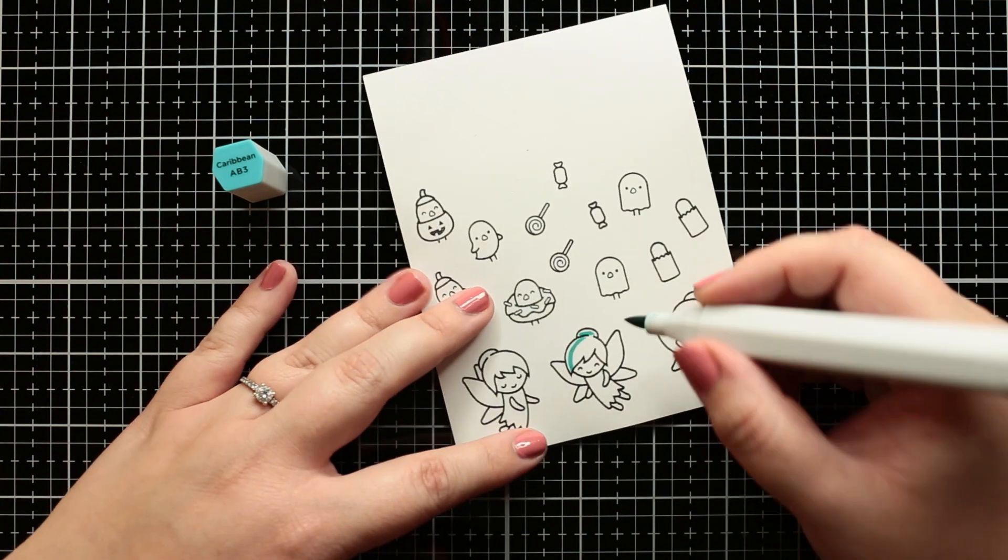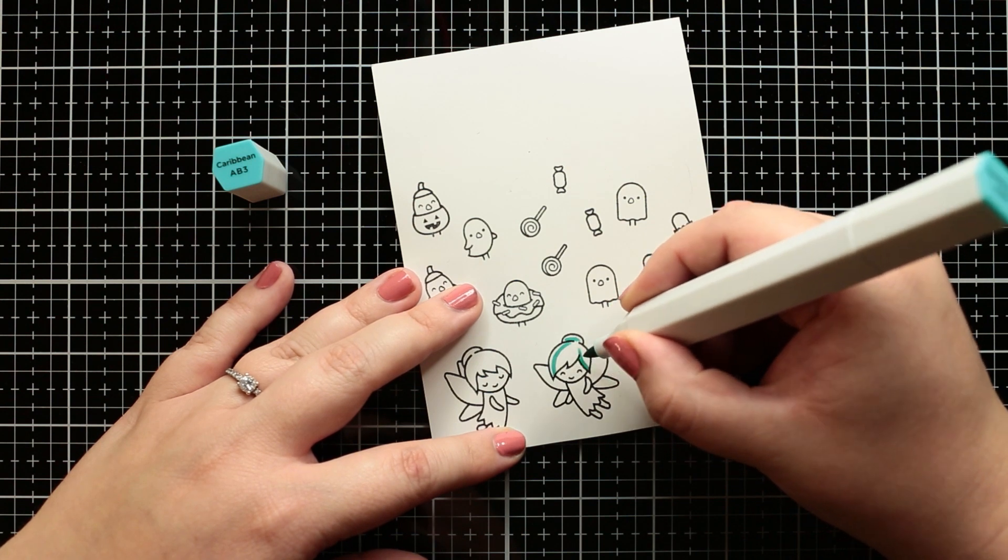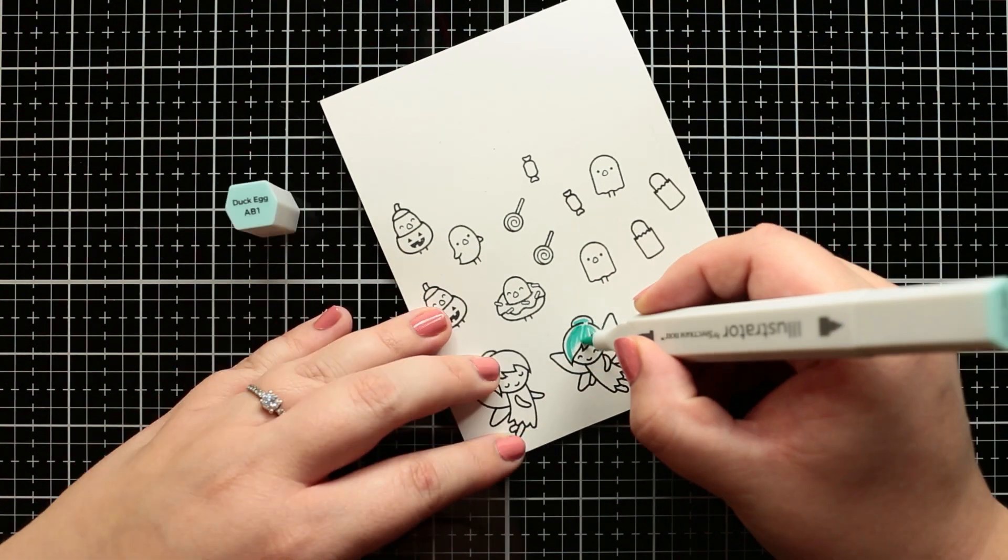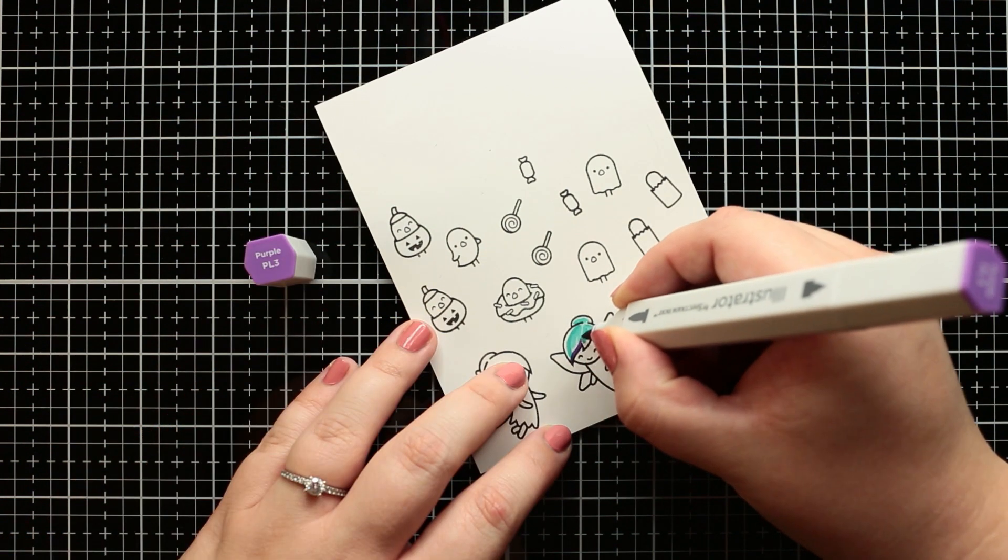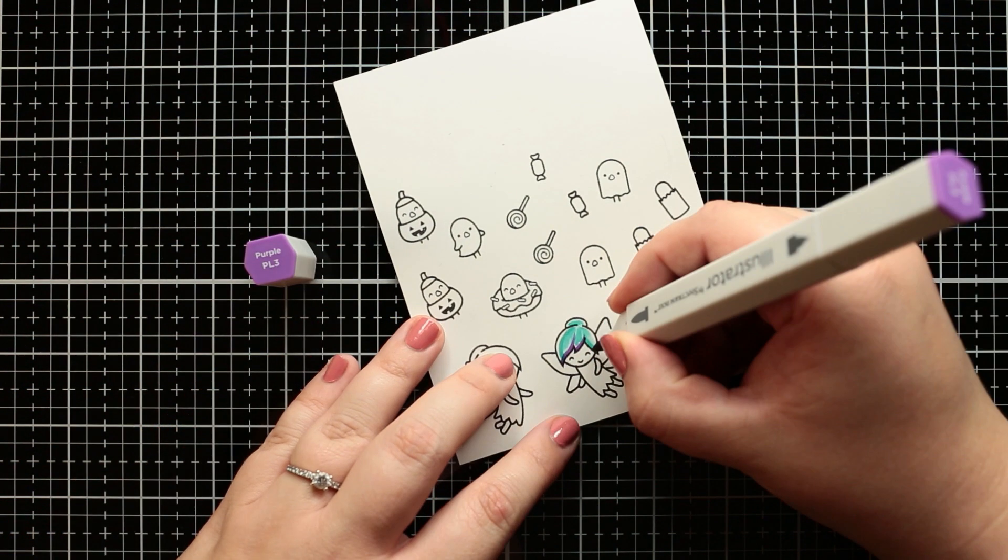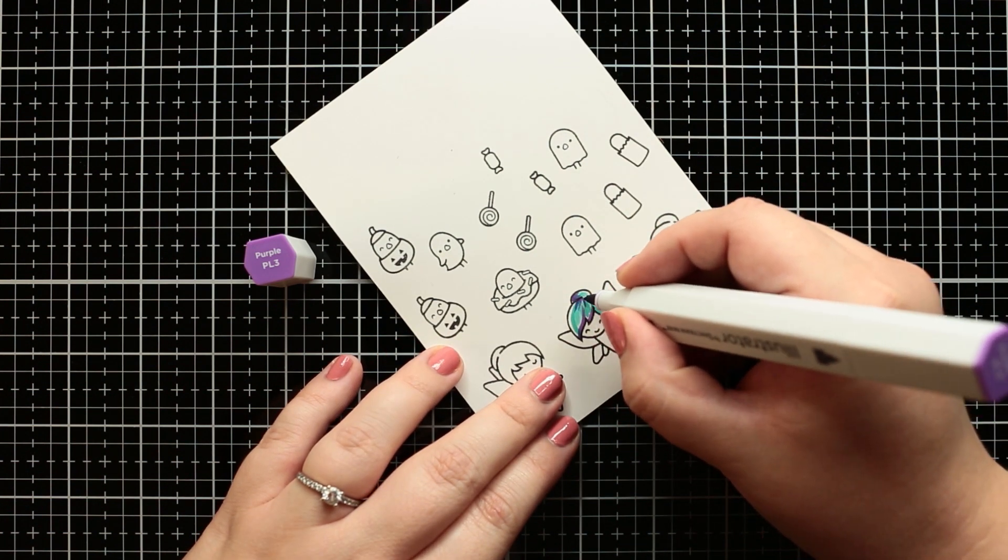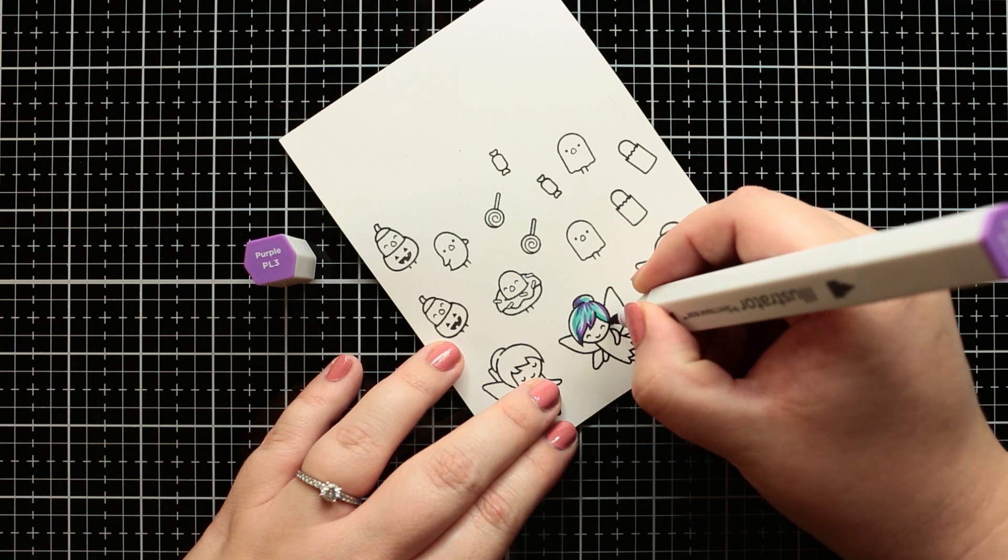I'm using my Spectrum Noir illustrator markers and I'm showing you the caps of the actually used colors on the left side of my workspace. If it's hard to see which I'm using currently, I put the numbers together with the products in the description box below.